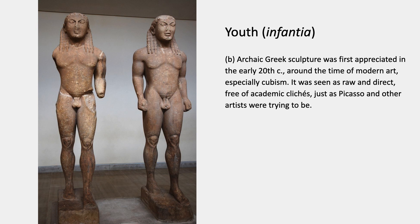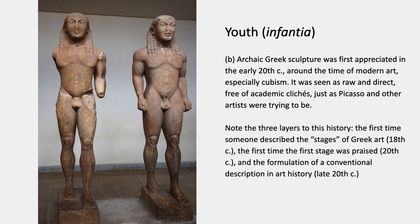Archaic Greek sculpture was first appreciated — first praised — in the early 20th century, around the time of modern art, especially Cubism. It was seen then as raw and direct and free of academic clichés, just as Picasso and other artists were trying to be. Note the three layers to this history: the first time someone described the stages was the 18th century, but the first time this stage was praised was the 20th century, because it went along with early modern art. It's possible that the experiments of Picasso and others helped people appreciate this art — it's hard to know what's cause and what's effect. And then there was the formulation of a conventional description in art history in the late 20th century.